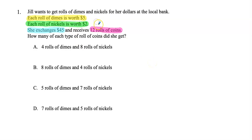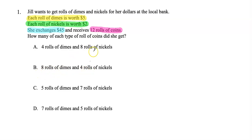It says she receives 12 rolls of coins. So the first thing I'm going to do is go through each answer choice and see if the total rolls of coins is 12. Answer choice A says 4 rolls of dimes and 8 rolls of nickels — that's 12. 5 rolls plus 7 rolls is 12. And 7 rolls plus 5 rolls is 12. So I can't eliminate any answer choices at this point.